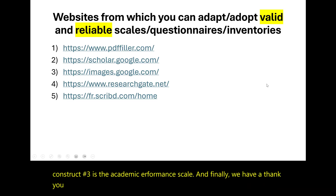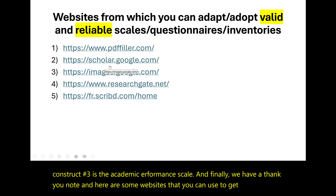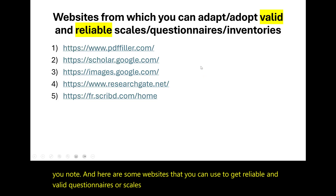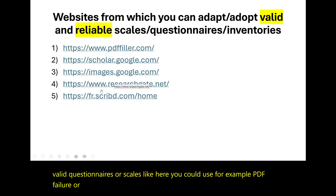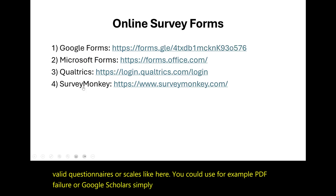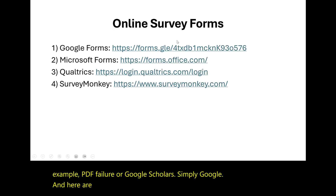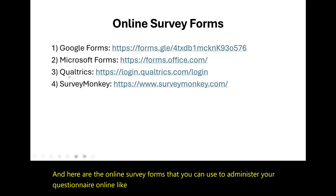Here are some websites you can use to get reliable and valid questionnaires or scales, like PDF Filler or Google Scholar — simply Google them. Here are the online survey forms you can use to administer your questionnaire online, like Google Forms, Microsoft Forms, Qualtrics, and SurveyMonkey, among others.